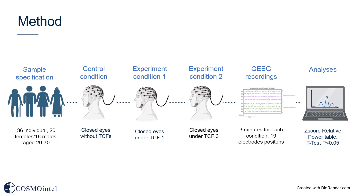The QEEG recordings captured various electrical waves categorized into delta, theta, alpha, beta, high beta and beta 1 waves. These recordings were analyzed using Neuroguide software, which transformed the QEEG data into a z-score relative power table. Statistical analysis involved paired t-test analysis with significance levels set at p-value less than 0.05, allowing for a comprehensive assessment of the impact of different T-consciousness fields on brainwave activity.